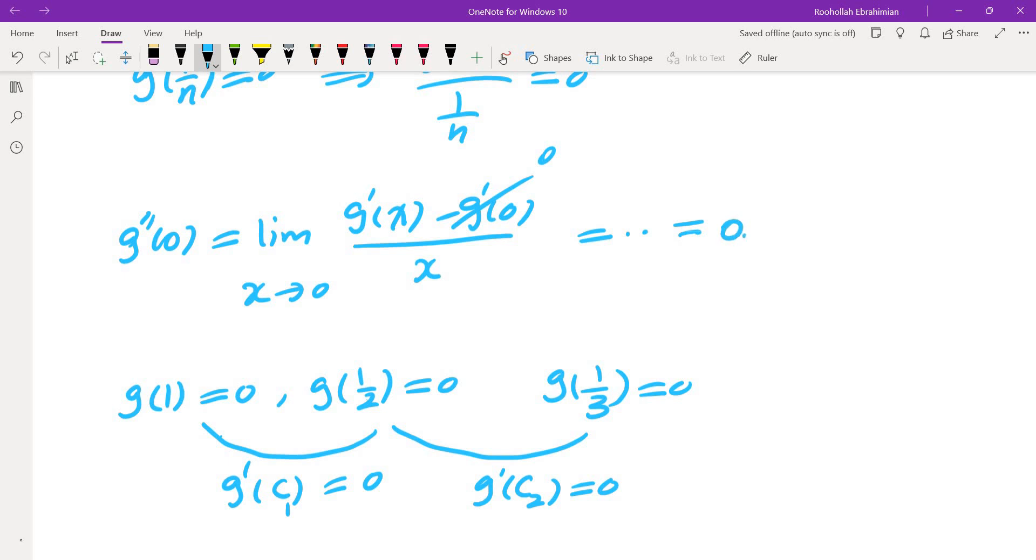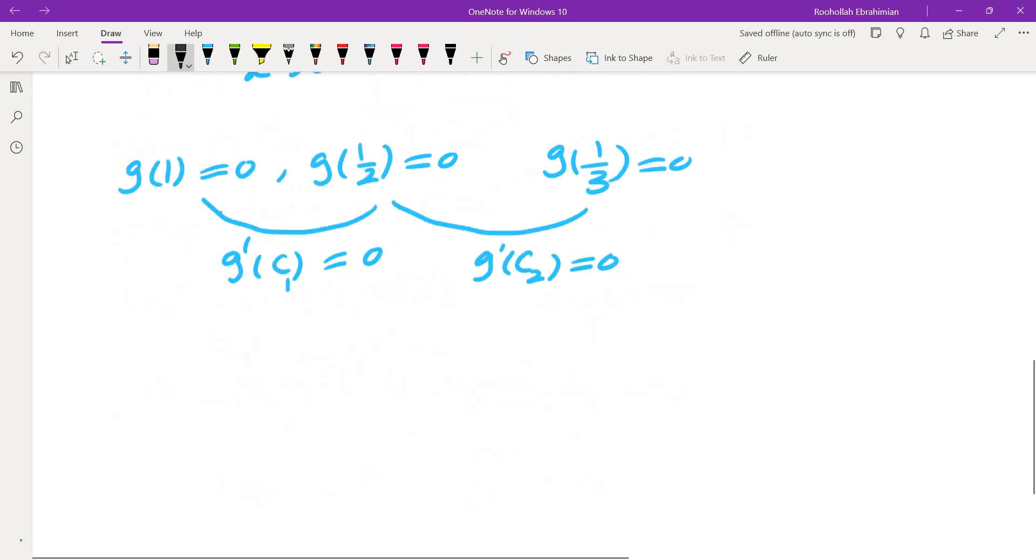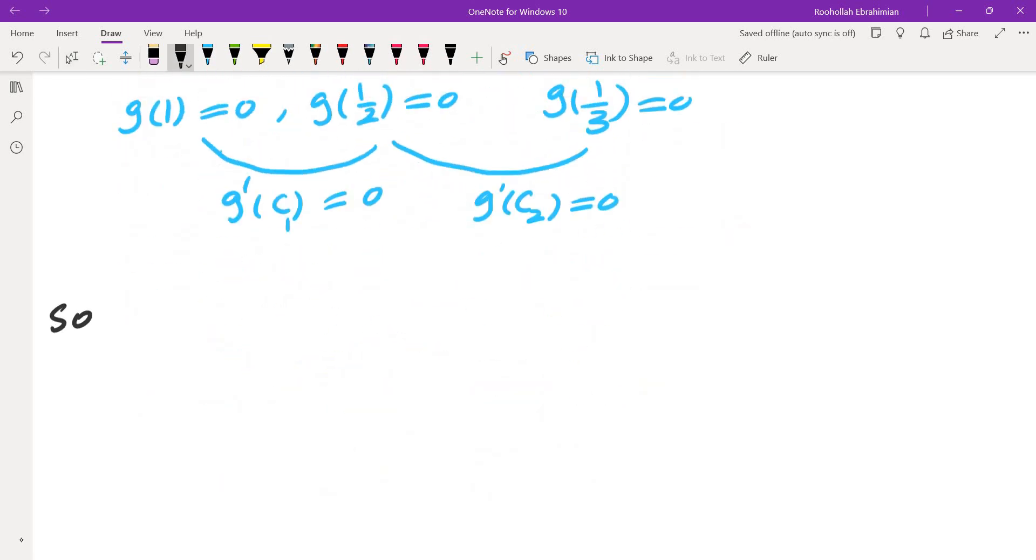So it looks like I can use this idea to solve the problem. Now let us write down a solution. So first define g from r to r by g of x equals f of x minus 1 over 1 plus x squared.